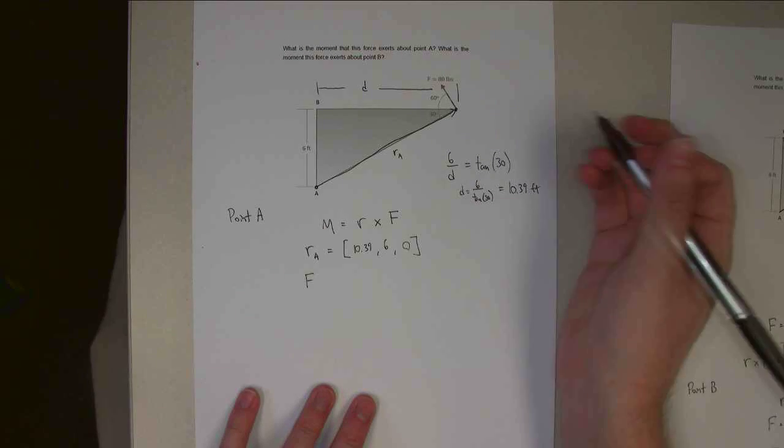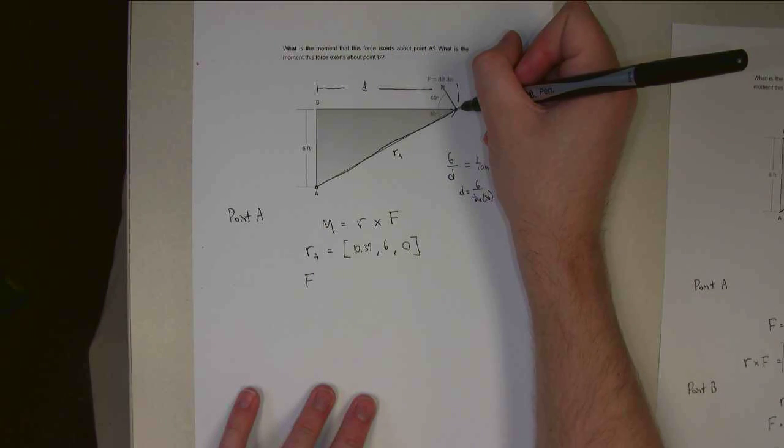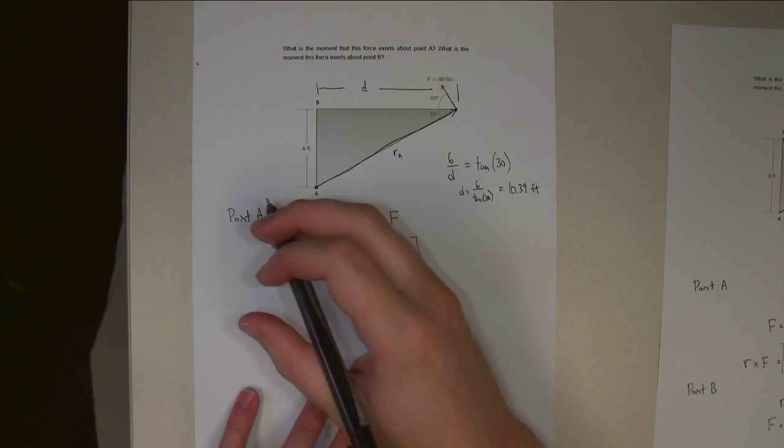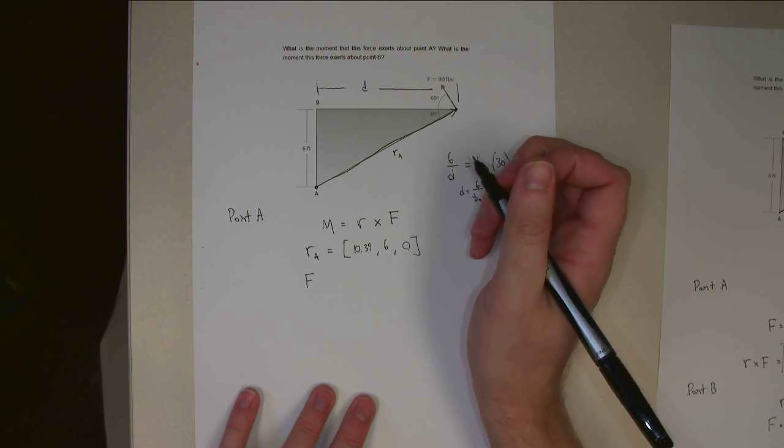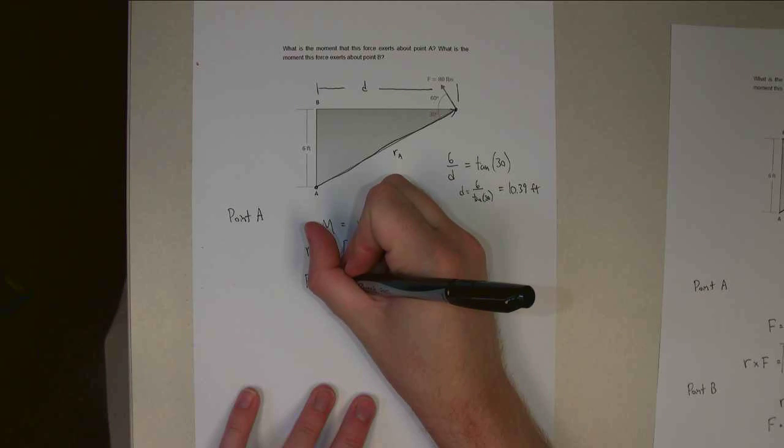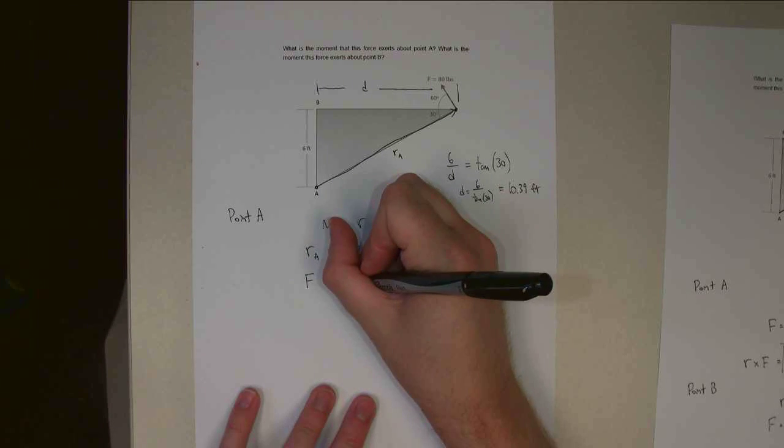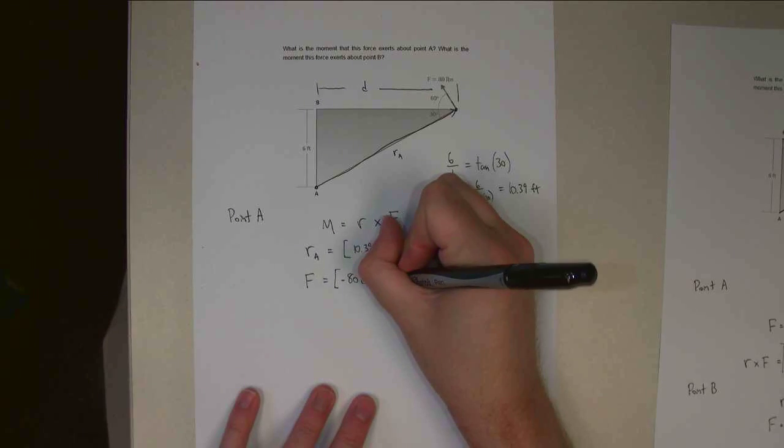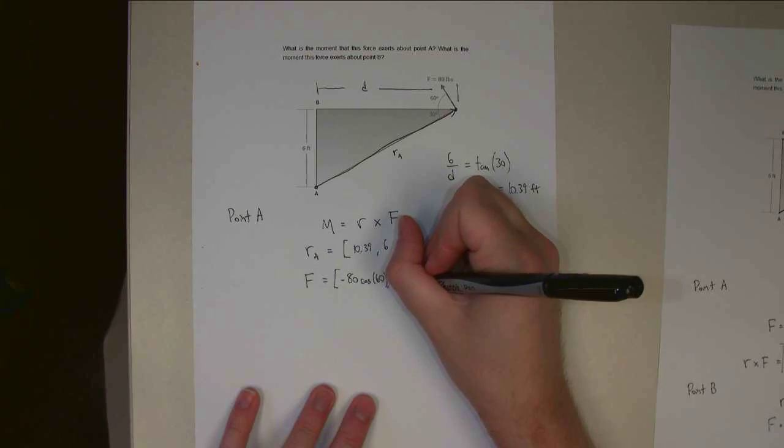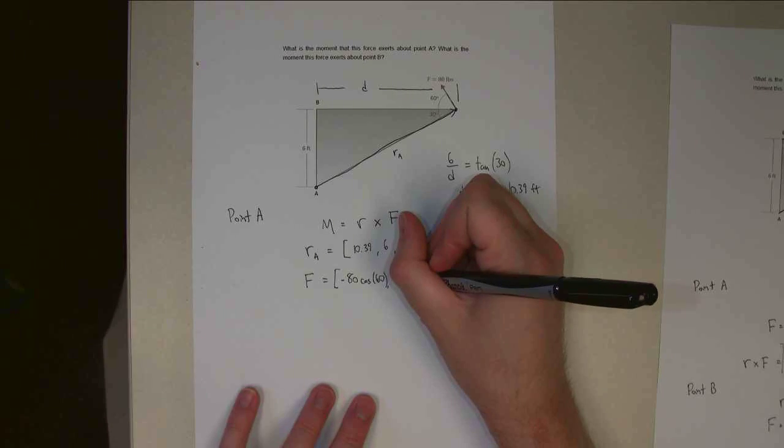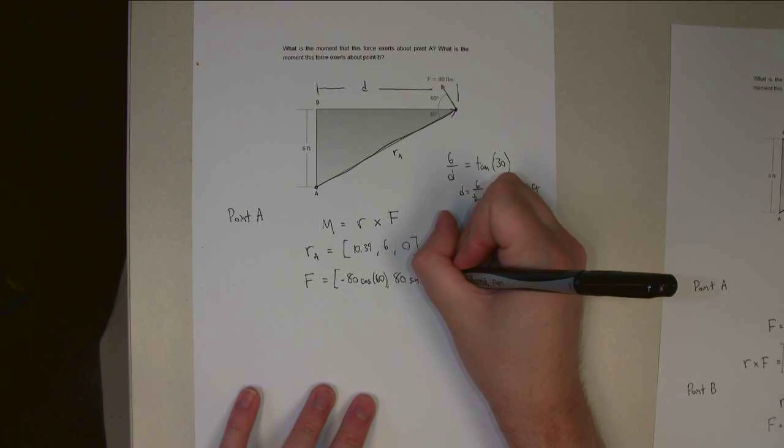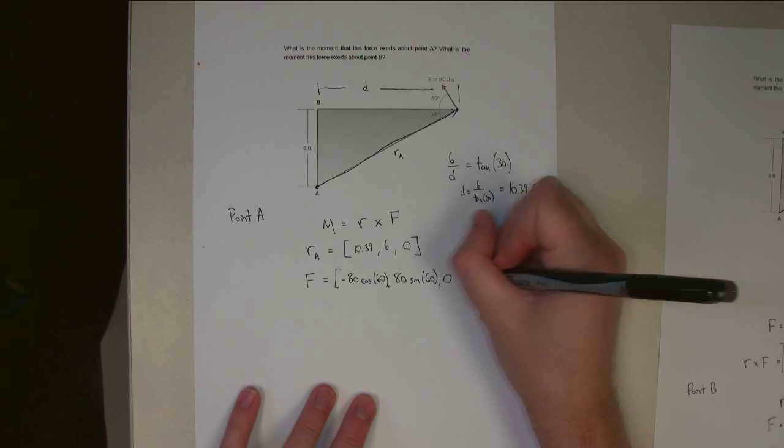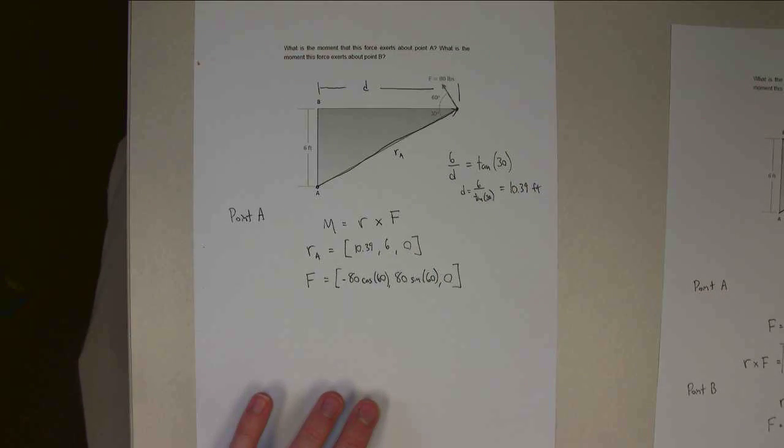So the force, it's negative in the X direction, positive in the Y direction, and so this is a 60 degree angle right here. So it's going to be force is equal to negative 80 cosine 60. The Y component is going to be 80 sine of 60. And the Z component of the force is also 0.